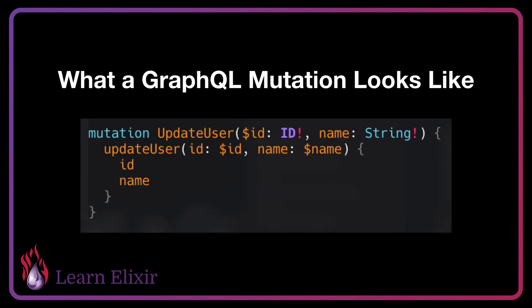Here's an example of what a GraphQL mutation looks like, and it's not too different. The basic idea is that we have our mutation keyword instead of our query keyword, and we name our mutation updateUser. In our mutation, we pass in the ID and the name, and they are both required. Then we have our mutation name, updateUser, which just passes in the ID and the name, and we're pulling off the ID and name in response.